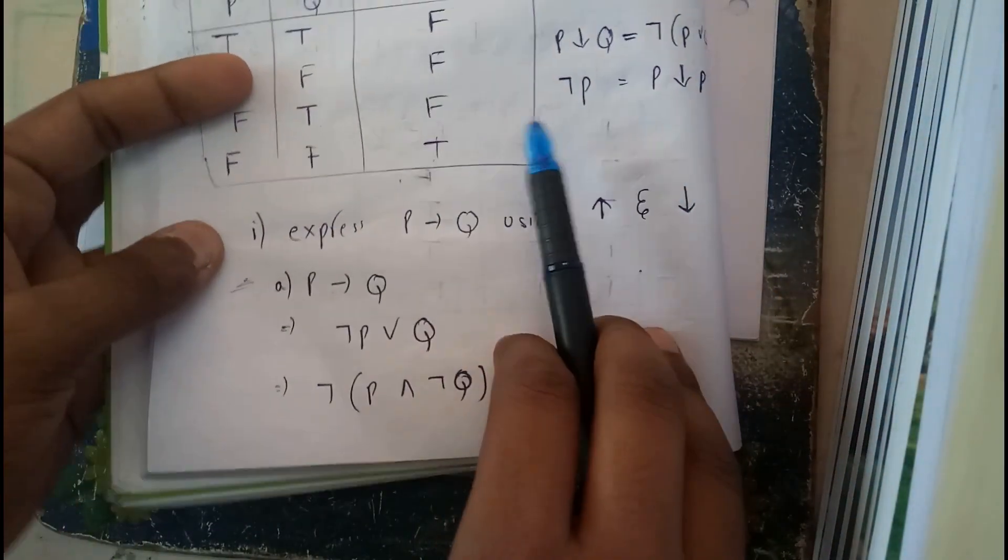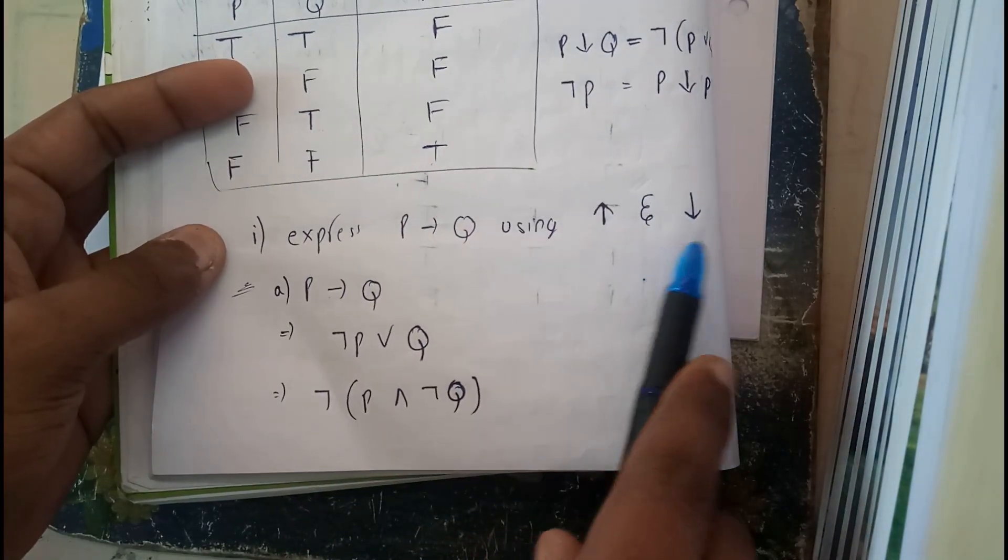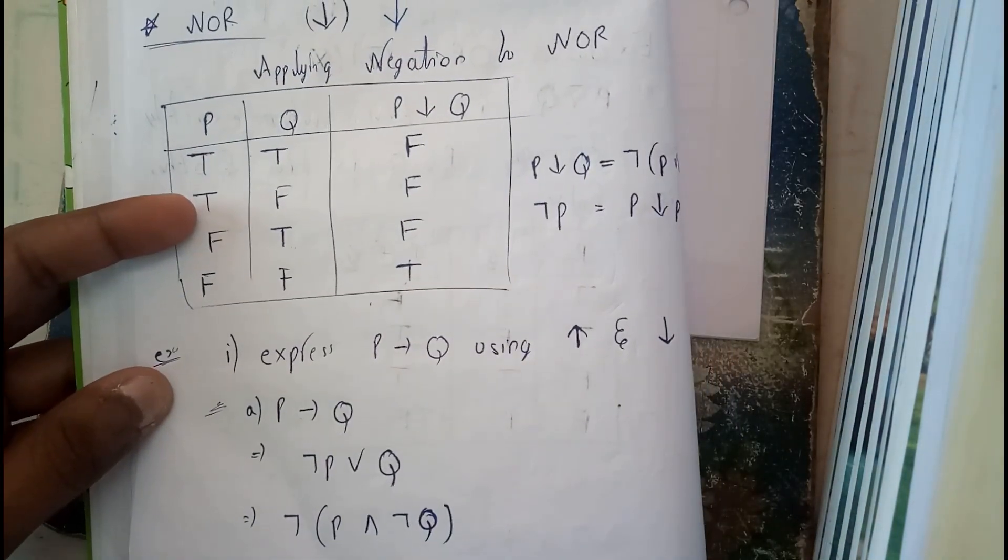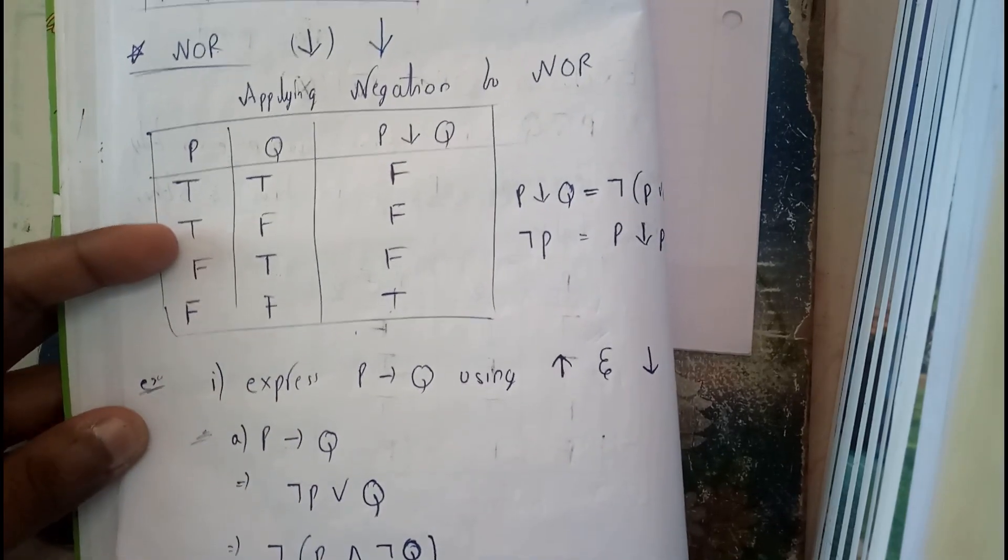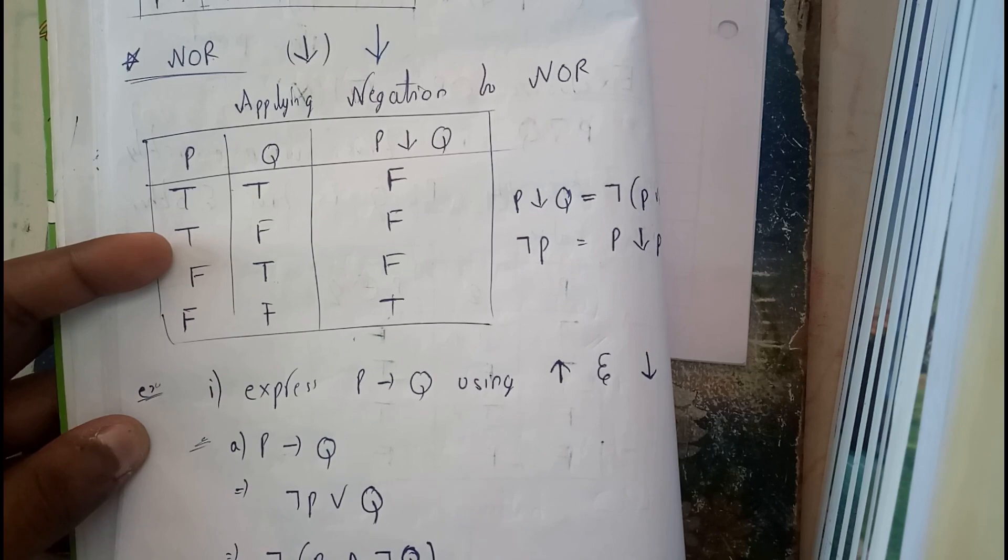Let us take a small example. He may also give like this: express P implies Q using NAND and NOR gates. For your information, NAND and NOR, these two are called universal gates.